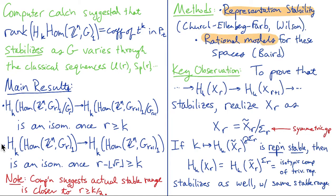And the other side of it, on the topological side, we use rational models for these spaces that were constructed by Tom Baird in his thesis. So the key observation behind what we're doing to prove these homological stability results is that if you have a sequence of spaces and you want to show that their homology groups stabilize, one way to do it is to realize those spaces as quotients of some bigger space by the symmetric group.